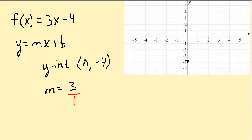So remember, we go up one, two, three, and then the run is one and it's positive, so we go to the right one unit. That gives us another point. And then we go up three and over one—there's another point. And then we'll draw the line.